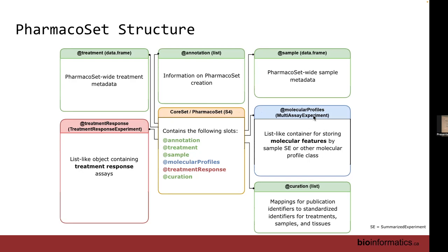We also keep metadata curated about samples and treatments. For example, cell lines found in GDSC are common cell lines that appear in Cellosaurus, which has a lot of information about each cell line. To help our work and the people we share with, we add that metadata from those databases to the pharmacoset, so you have access to it locally without having to go fetch it yourself.